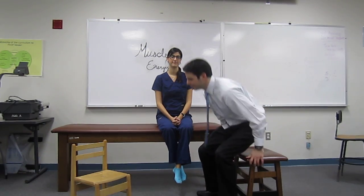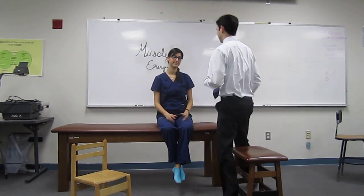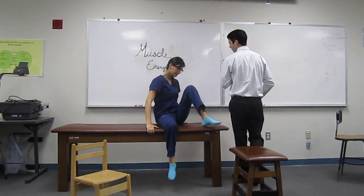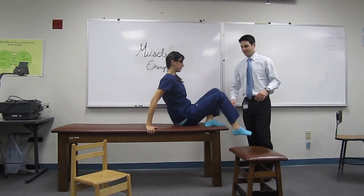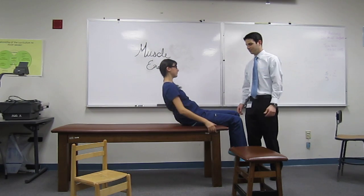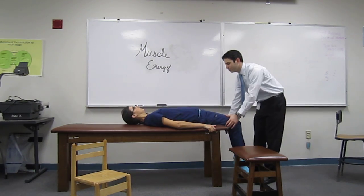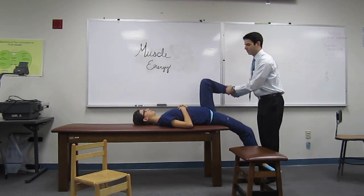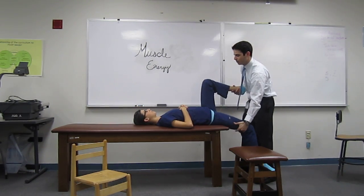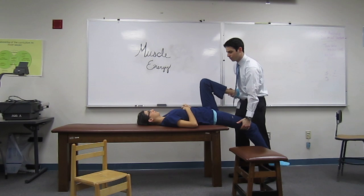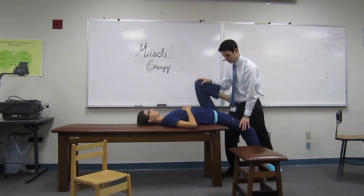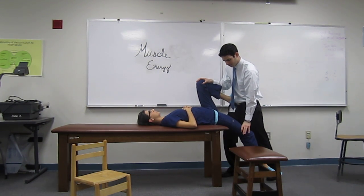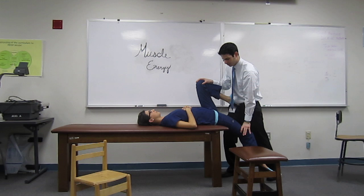We're going to have Tara lay down on her back as we begin working with muscle energy. We've previously diagnosed Tara with a tight right psoas. We'll bring the left leg up into hip flexion and exaggerate the right leg into hip extension, which will help stretch the right psoas.